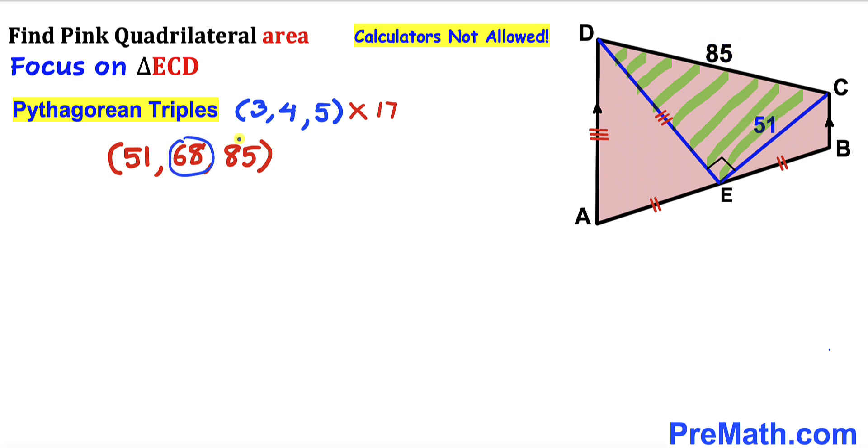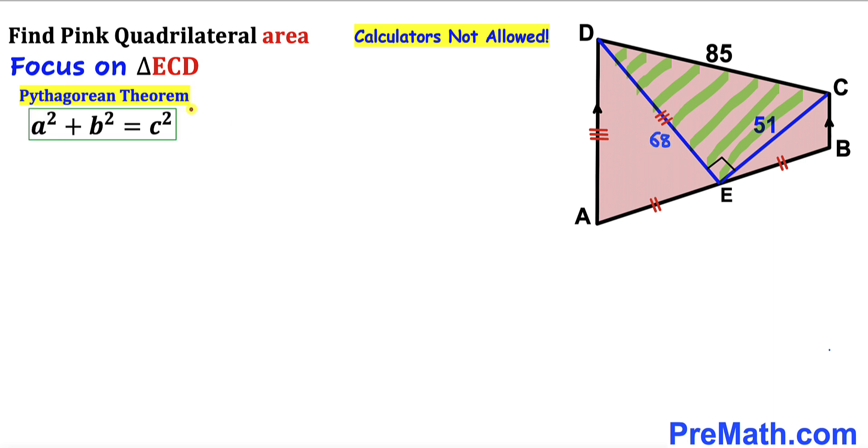So therefore this missing side DE is going to be 68 units. And by the way we could have used the Pythagorean theorem to calculate this side length DE. Our Pythagorean theorem is a squared plus b squared equals c squared. If I label this side length lowercase a, this lowercase b, and this hypotenuse c.